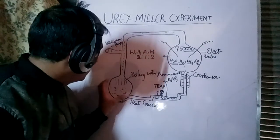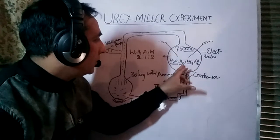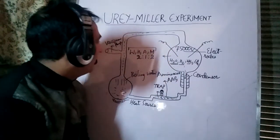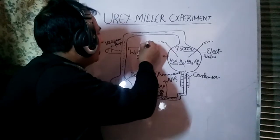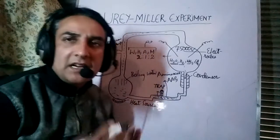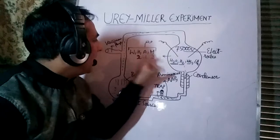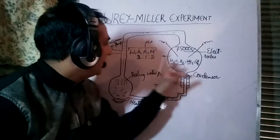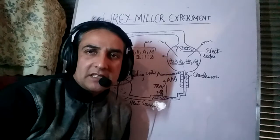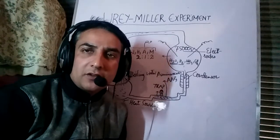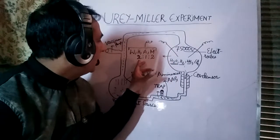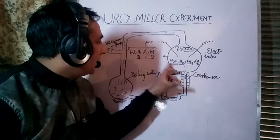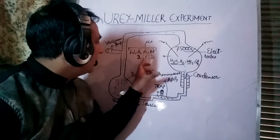In the Urey-Miller experimentation, the boiling water vapor moved into the flask where hydrogen, ammonia, and methane were already present. You can remember these by the simple formula W-H-A-M: W means water, H means hydrogen, A means ammonia, and M means methane. The ratio of hydrogen to ammonia to methane is two to one to two — this is often asked in competitive examinations.